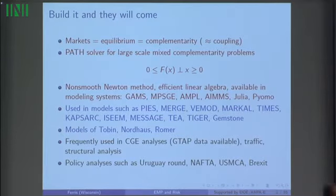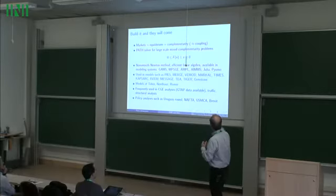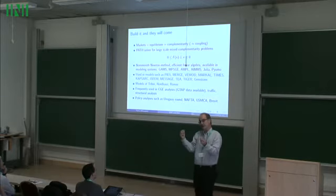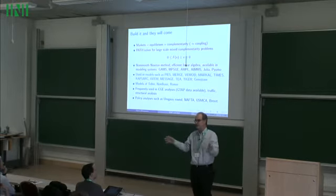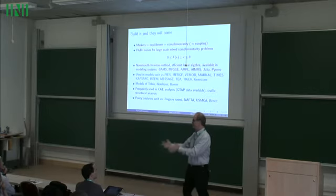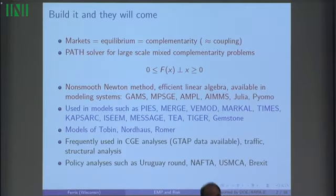We built a non-smooth Newton method. It has some efficient linear algebra, so it was a computational tool so that it would actually solve real problems. And it's available in a bunch of modeling systems, because it's not only the mathematicians who know how to write down the function f and its Jacobian and Hessian, but you want to have the compute to be able to do this effectively and allow people in the real world to solve these problems. So it's available on GAMS, MPSG, Ample, Ames, Julia, Paomo.